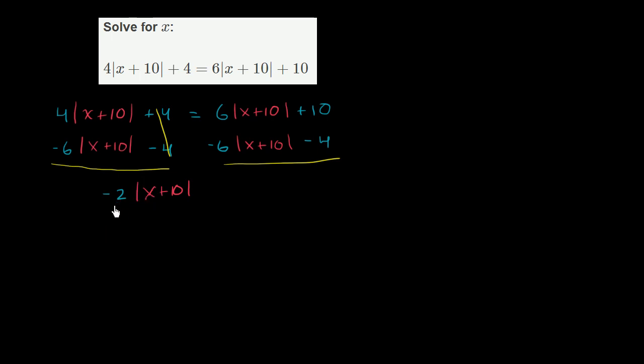So it's negative 2 times the absolute value of x plus 10 is equal to, well, the whole point of this, of the 6 times the absolute value of x plus 10 and minus 6 times the absolute value of x plus 10 is to make those cancel out. And then you have 10 minus 4, which is equal to 6.